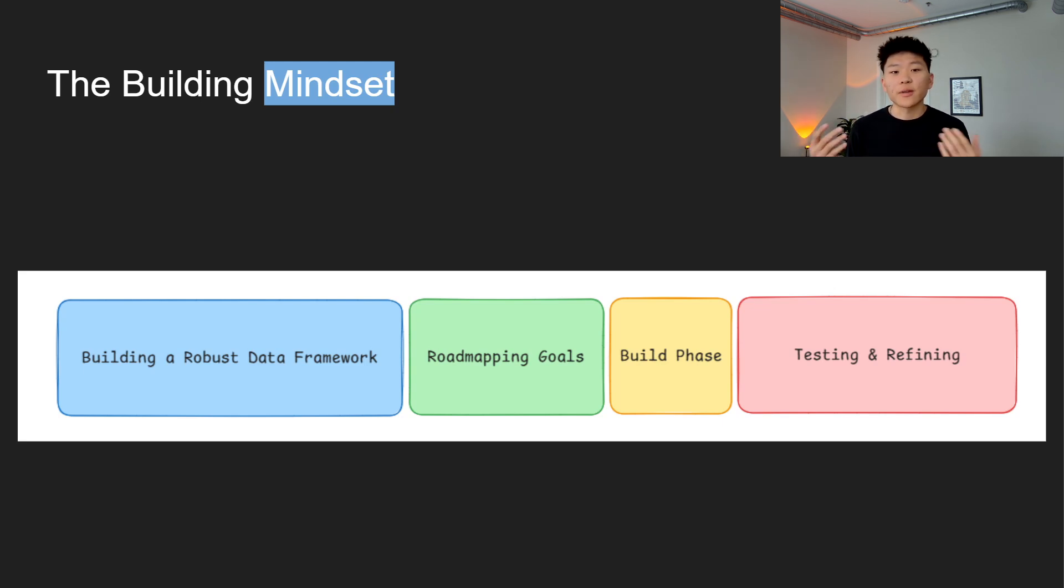Then another huge chunk is roadmapping your goals. Once your data foundation is in place, you need to understand what are you trying to accomplish? What specific tasks do you want the agent to handle? By breaking down your objectives into smaller actual tasks, you can build out an agent framework with clarity and purpose. What we're trying to avoid here is building out an agent that initially works, but then three months later having to rebuild that agent.